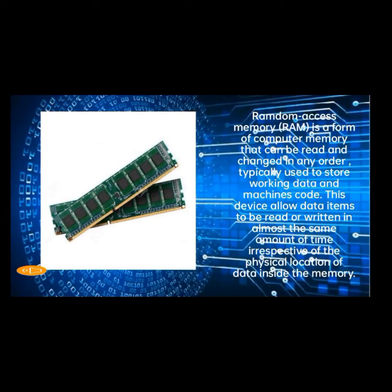Random Access Memory or RAM is a form of computer memory that can be read and changed in any order, typically used to store working data and machine code. A random access memory device allows data items to be read or written in almost the same amount of time, irrespective of the physical location of data inside the memory.